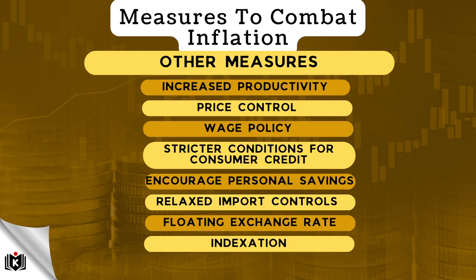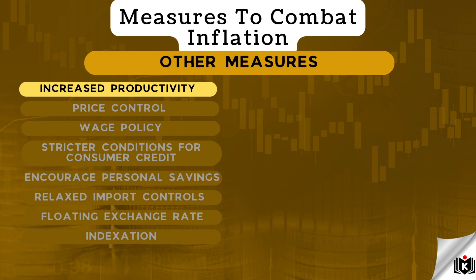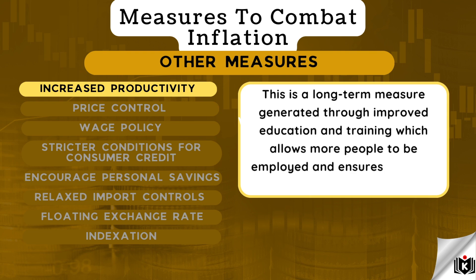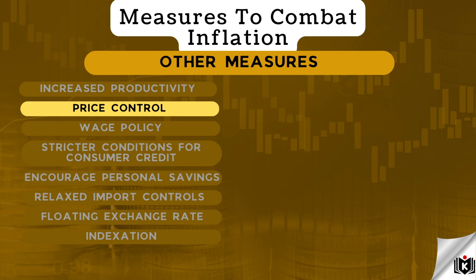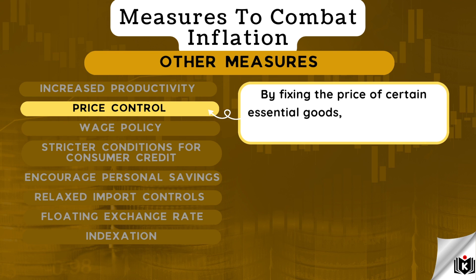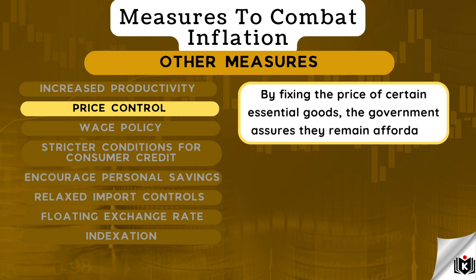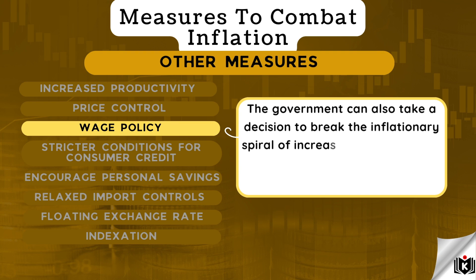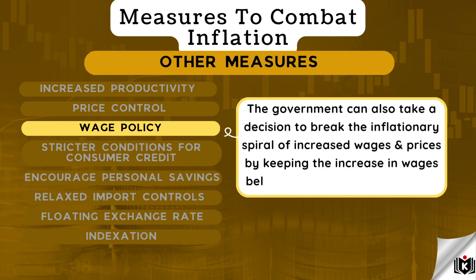Additional measures that can be taken to combat inflation include the following. Increase productivity — this is a long-term measure generated through improved education and training, which allows more people to be employed and ensures they are more productive. Price control — by fixing the price of certain essential goods, the government assures they remain affordable. Wage policy — the government can also take a decision to break the inflationary spiral of increased wages and prices by keeping the increase in wages below or at the level of inflation.